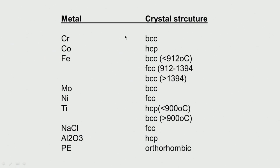The crystal structure — for example, chromium is body-centered cubic, cobalt is hexagonal close-packed. Iron interestingly changes its crystal structure at different temperatures: below 912°C and above 1394°C it differs. Molybdenum is BCC, nickel is FCC, titanium below 900°C is HCP and above 900°C is BCC. Sodium chloride is FCC, aluminium oxide is HCP. Polyethylene is a polymer — generally polymers are amorphous, but many can be crystalline or have a mixture; polyethylene is orthorhombic.